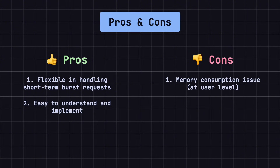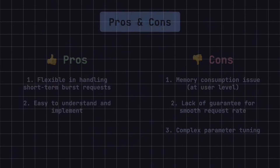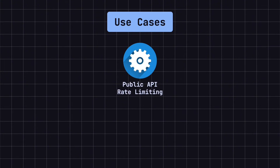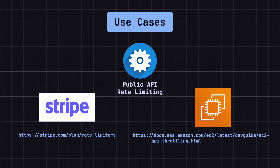However, it has some drawbacks. First, there can be memory usage issues, as having a separate token bucket for each user can lead to increased memory consumption as the number of users increases. Second, it doesn't guarantee a smooth request rate. Finally, tuning the parameters like bucket capacity and token generation rate can be complex and requires careful adjustment based on actual system needs. The token bucket algorithm is widely used for API rate limiting. For example, public APIs can use this algorithm to control the request rate from individual users or applications, preventing server overload due to excessive requests. It can handle occasional request peaks while maintaining overall traffic stability. APIs like Stripe's and AWS EC2's use the token bucket algorithm for rate limiting.